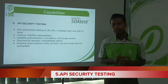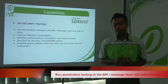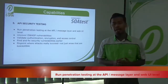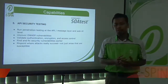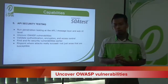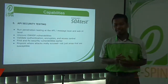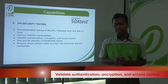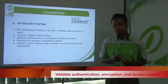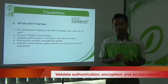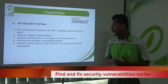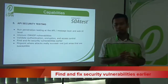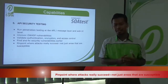The next capability of SOA test is API security testing. It can run penetration testing at the API or machine layer and web UI level. SOA test also uncovers OWASP vulnerabilities and validates authentication, encryption and access control. SOA test can find and fix security vulnerabilities earlier. It also pinpoints where attacks really succeed, not only areas that are susceptible.